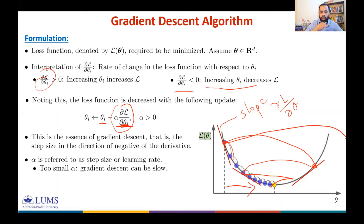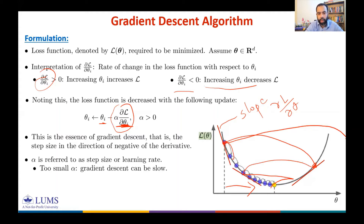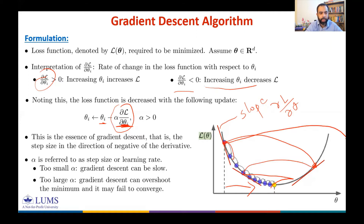Instead of moving toward the yellow optimal point, you start moving away from it. I will demonstrate this with a short demo. In summary, a too-large alpha means gradient descent can overshoot the minimum and may fail to converge.